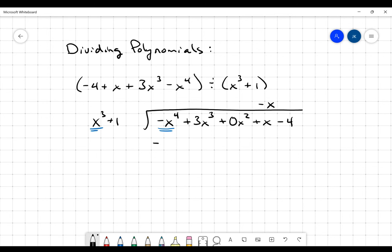So negative x times x cubed is going to be negative x to the fourth. Negative x times one is going to be negative x. And again, I'm lining up terms of the same degree. And then just like you did with long division way back when, we're going to subtract. Now negative x to the fourth minus negative x to the fourth is going to be zero x to the fourth. It's going to go away.